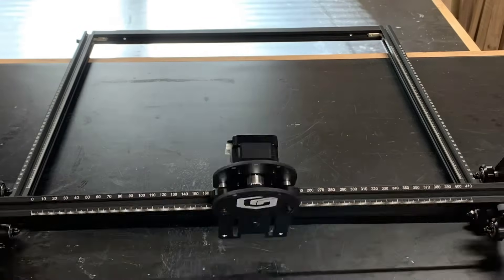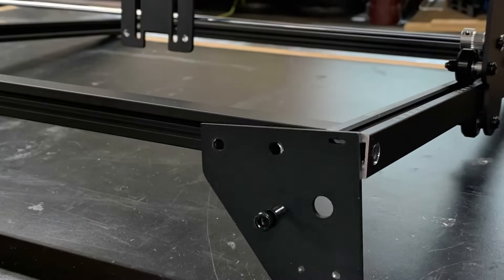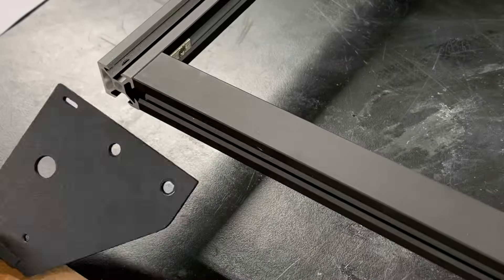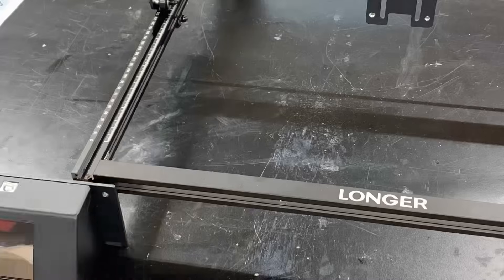Once the frame was fully together, the x-axis armature rolled right on. The two rear and the front right legs went on next. Then I installed the control unit on the front right corner.